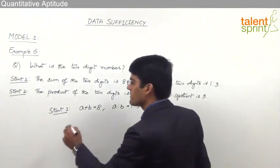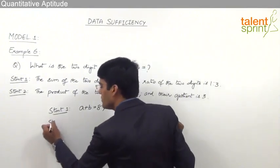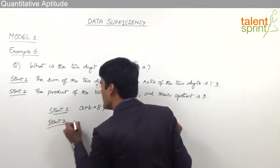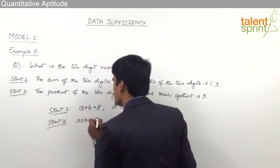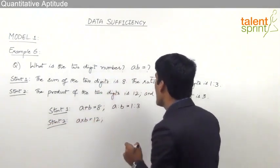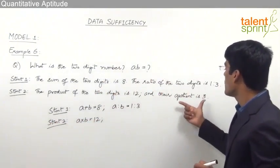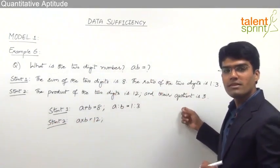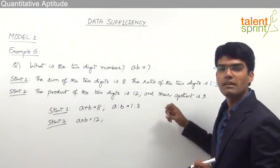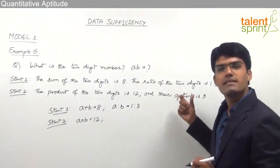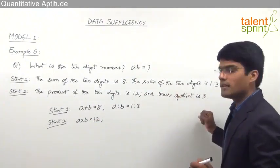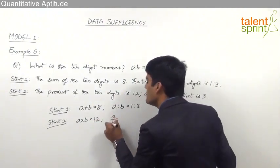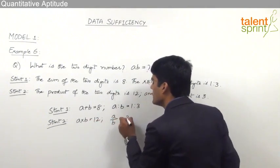Statement 2 says the product of the two digits is 12, so A into B equals 12. And their quotient is 3 — meaning when we divide the digits the answer will be 3 — so A by B equals 3.